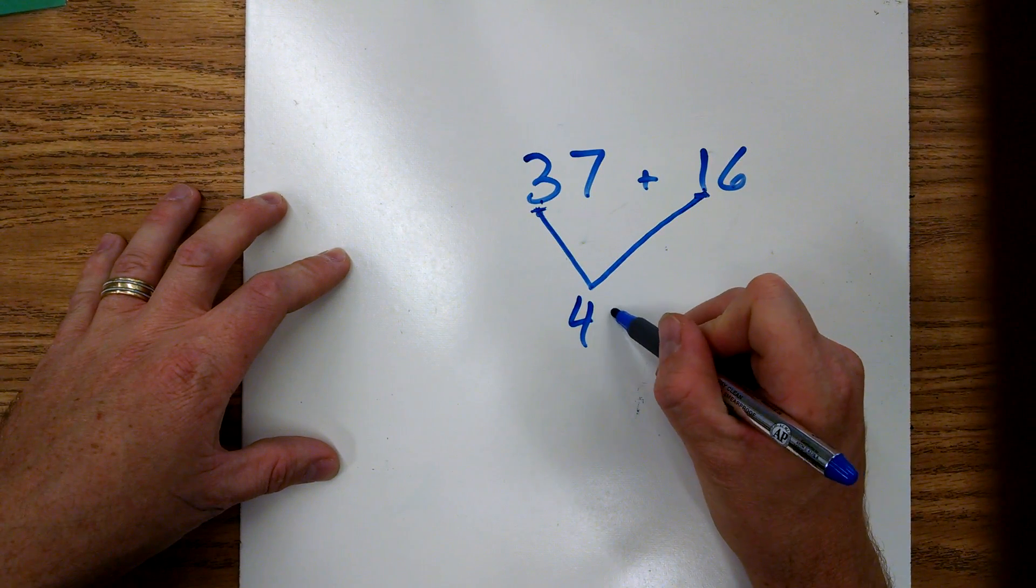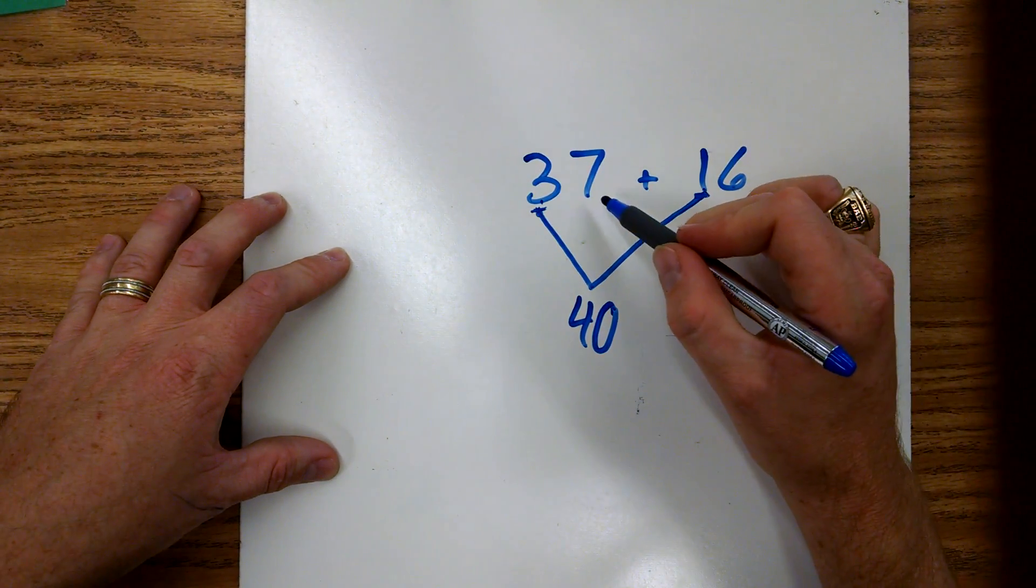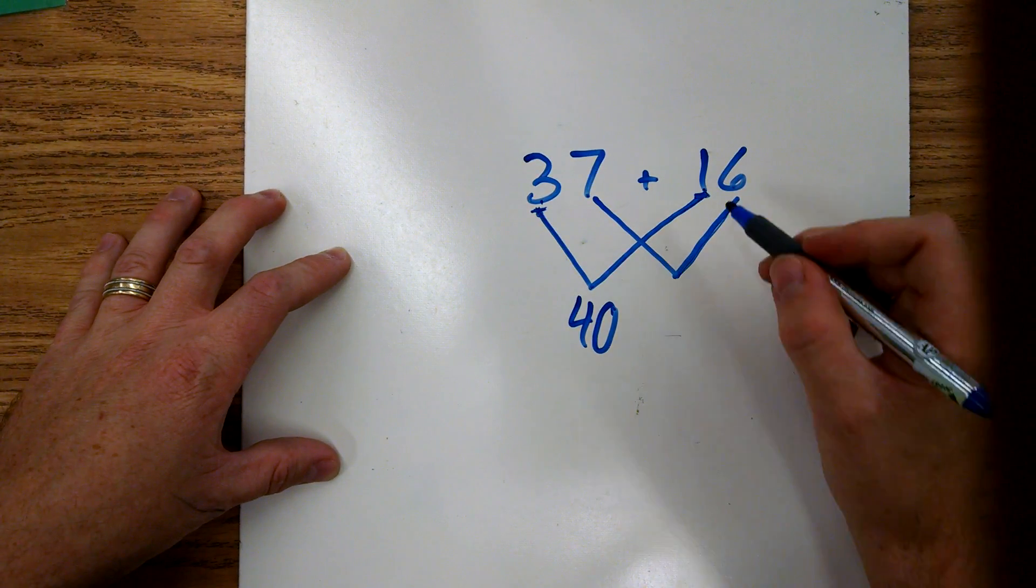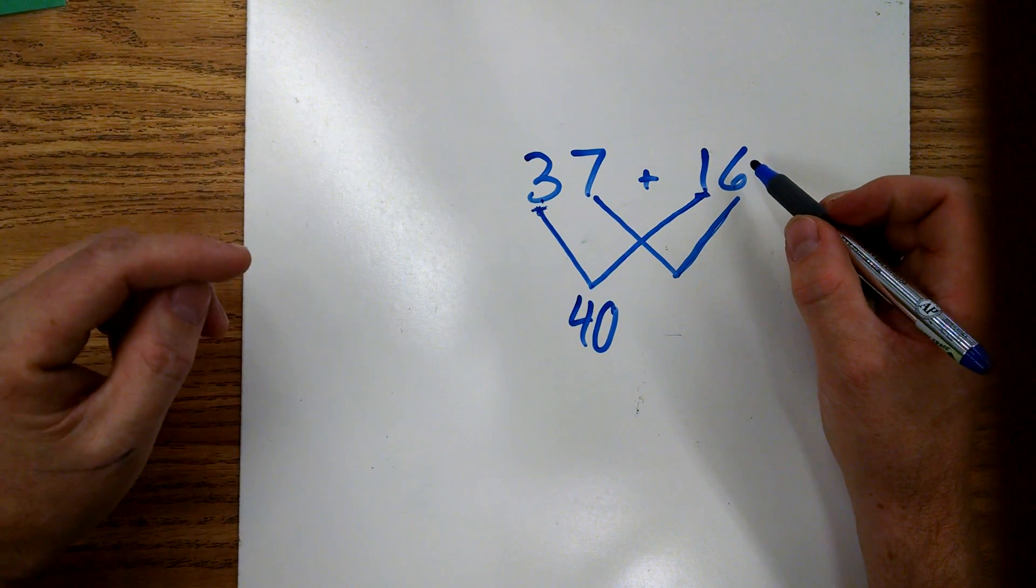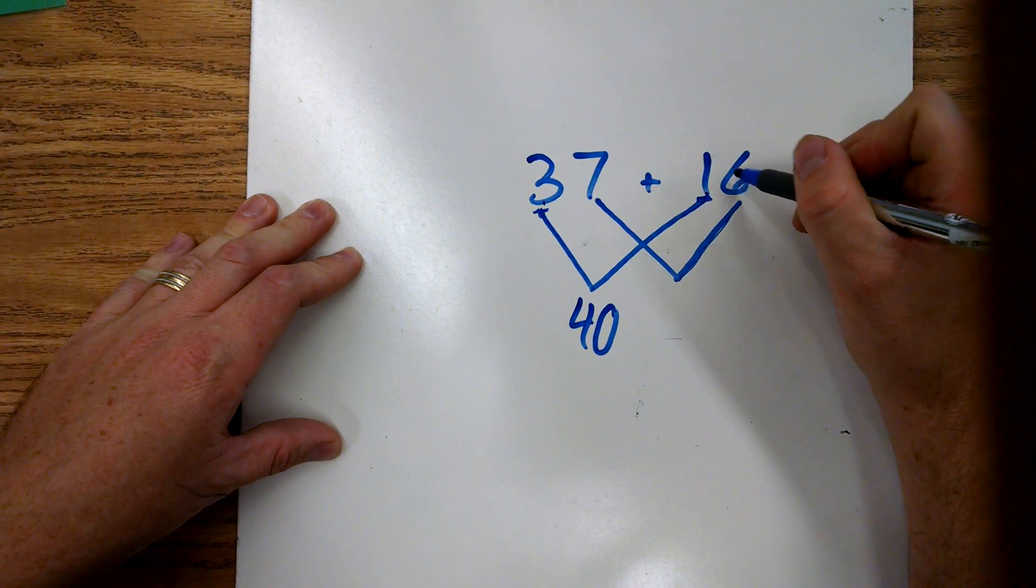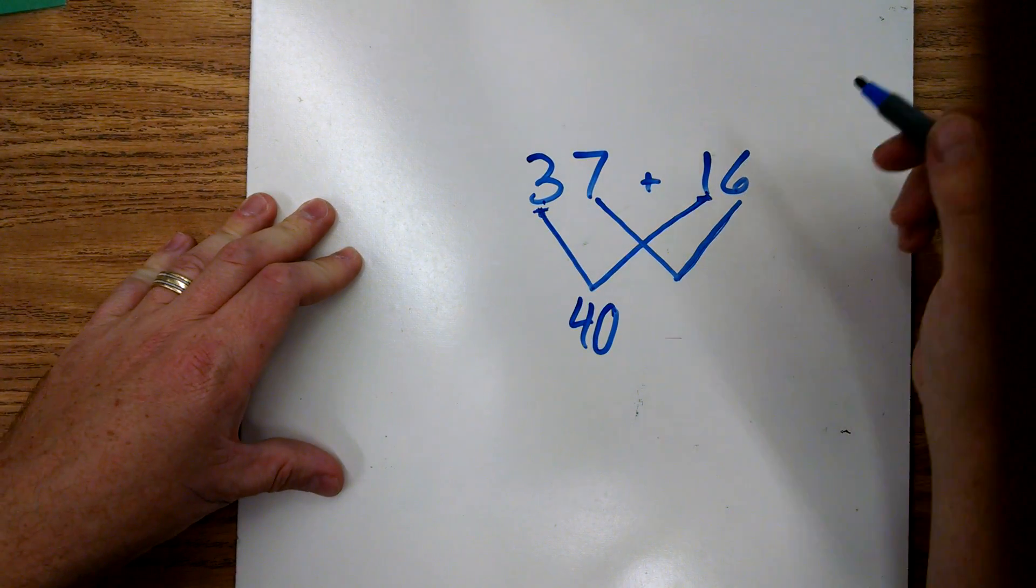Then we're going to add our seven ones and our six ones. A lot of us have been doing two-digit doubles facts, so for six plus seven we might think six plus six plus one more, and that can help you to figure that out.